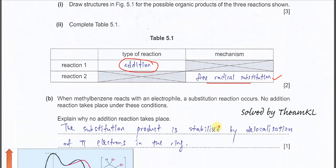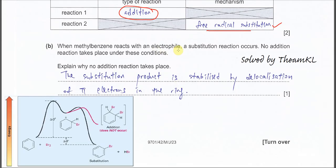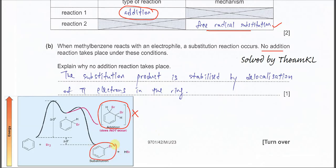For part b, when methylbenzene reacts with an electrophile, a substitution reaction occurs — not addition. Even though there are three C=C double bonds in the benzene ring, addition does not happen because the products formed would not be stable. The substitution product is more stable than the addition product.